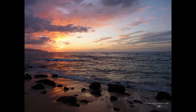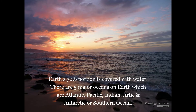A globe is an exact model of the Earth, which is spherical in shape and helps us identify continents and oceans. But carrying a globe is not practical, and it does not carry detailed information like that of small towns.